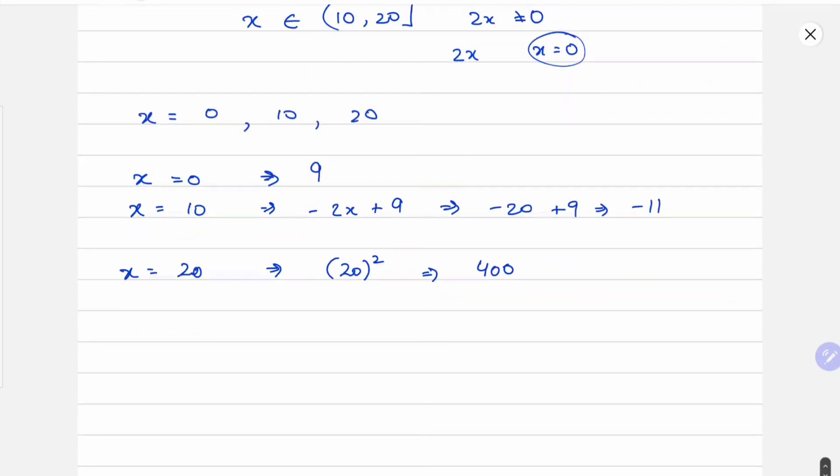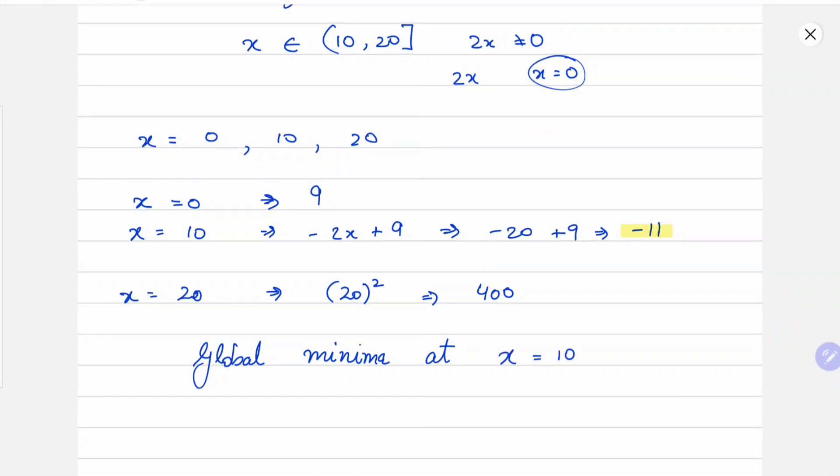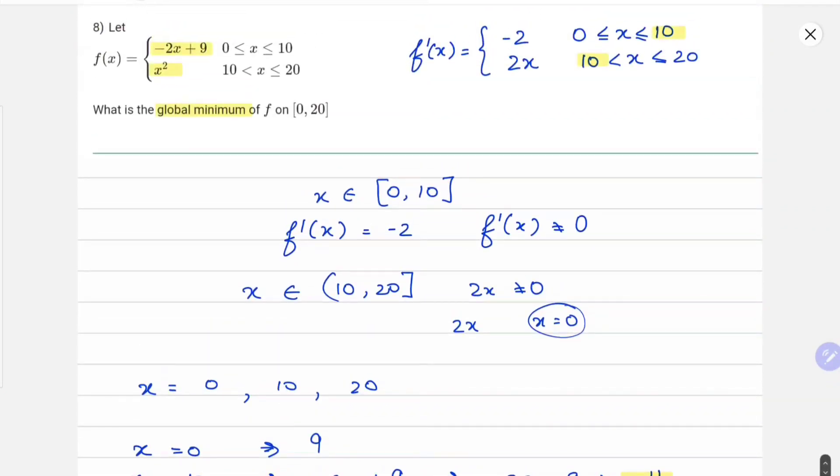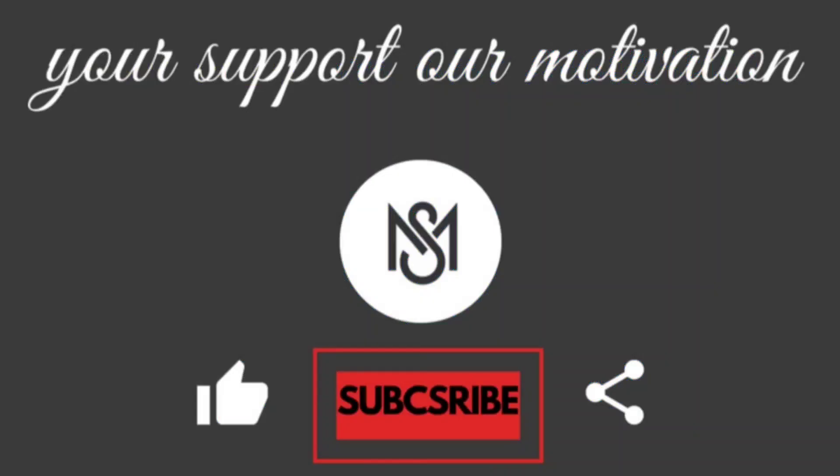You can clearly see that -11 is the least value. So we get the global minimum at x = 10. Thank you.